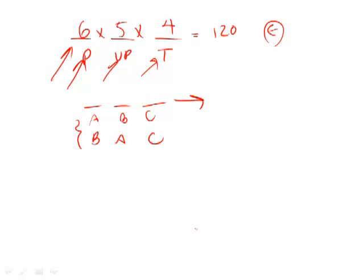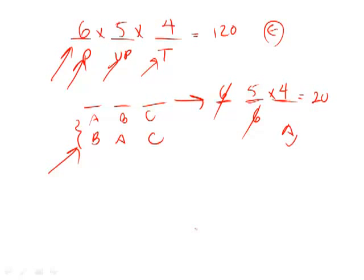For combinations we still use the dashes: 6 × 5 × 4. But we divide by a certain number to eliminate the extra repeats that are essentially the same committee. We always count the number of dashes — here we have three — and divide by three factorial. Three factorial is 6, which cancels, leaving 5 × 4 = 20. That gives us answer choice A.